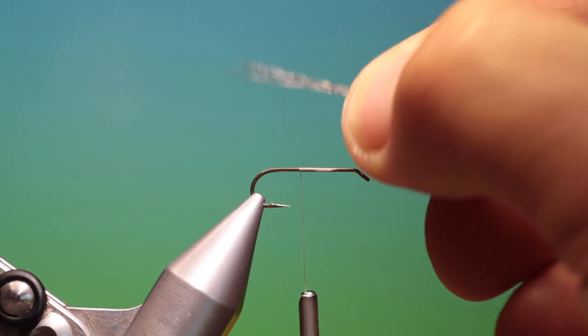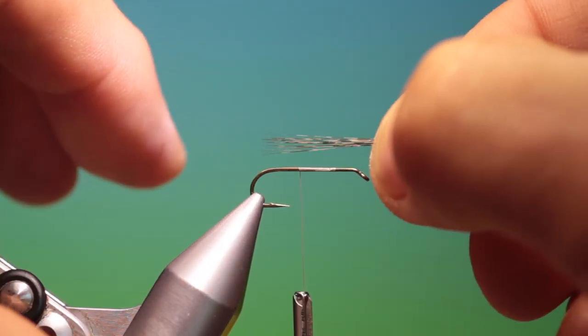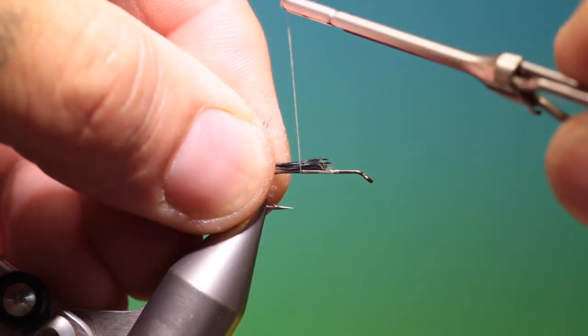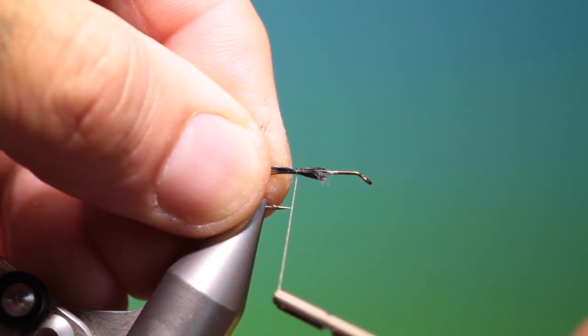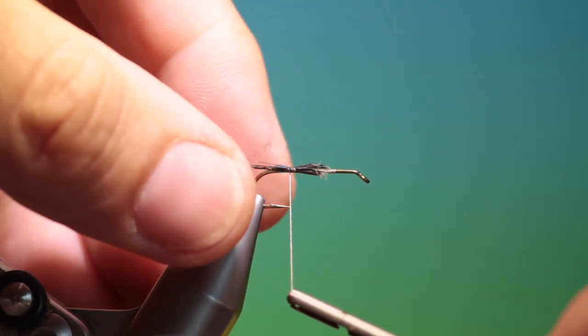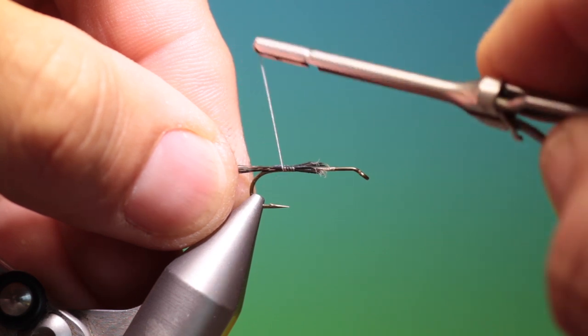And we need a bunch of coq de leon. It should be about the same length as the hook shank. So we just tie this in. There. Just tack it down and check the length. That's good. And go back.